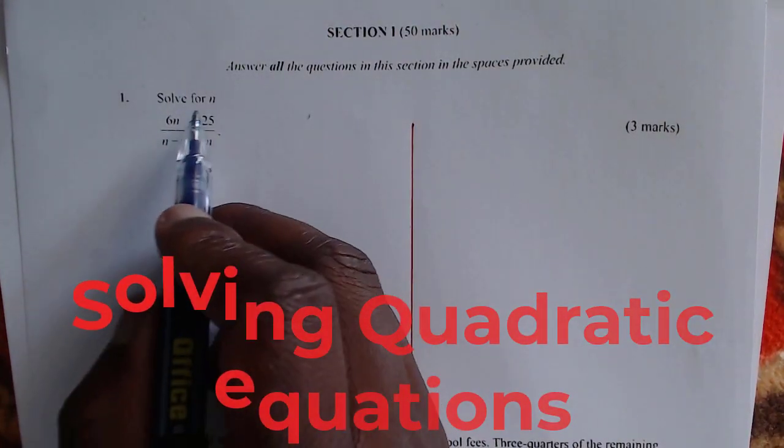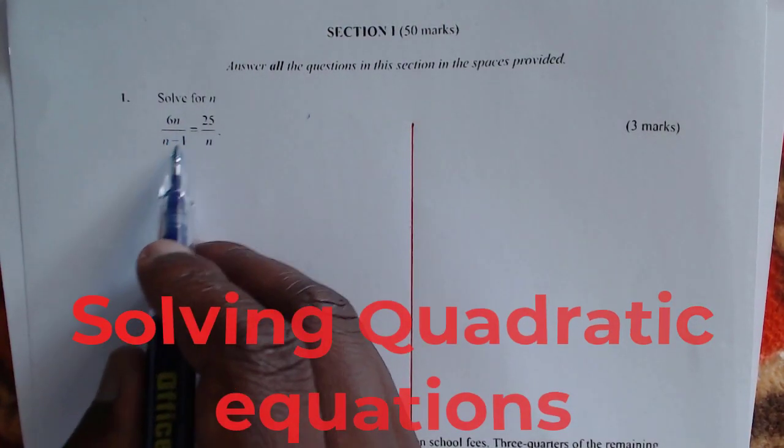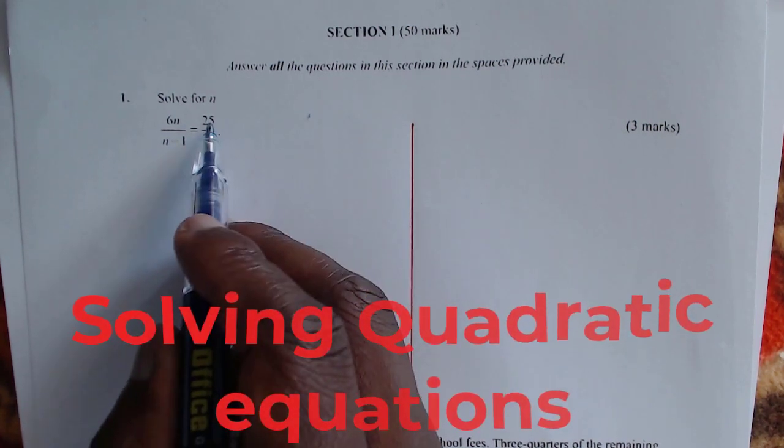Question number 1. Solve for n: 6n divided by n minus 1 equals 25 over n.